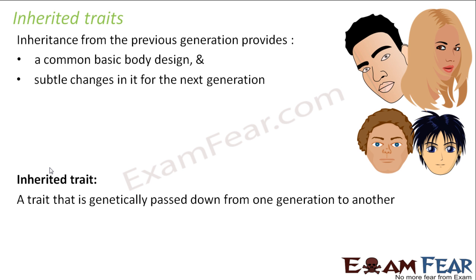Look at this example. You can see a man with black hair and a woman with brown hair — they got married and gave birth to two kids. One of their kids has got black hair, which he inherited from his father, so black hair is an inherited trait. Similarly, the other kid who has brown hair inherited that from his mother, so brown hair is also an inherited trait. Hair color is therefore an inherited characteristic.